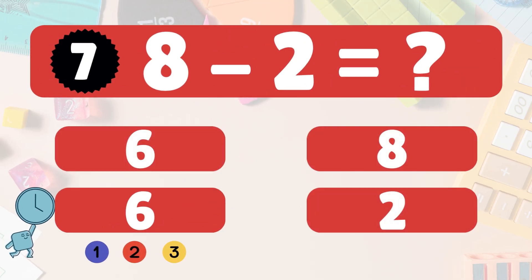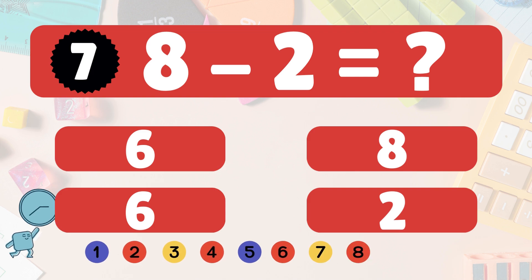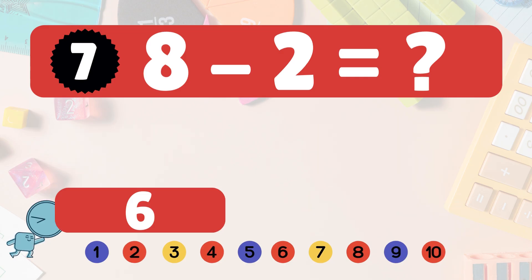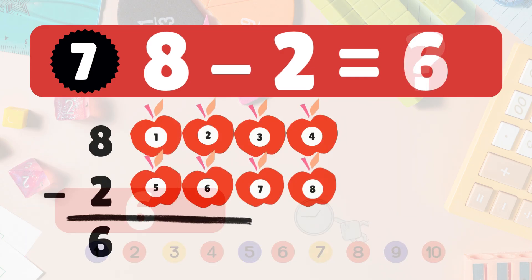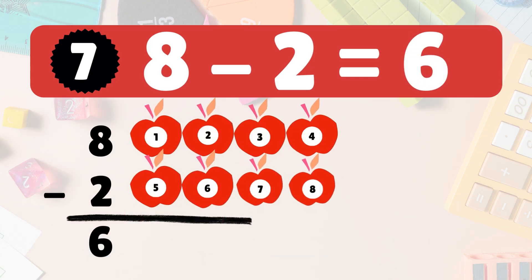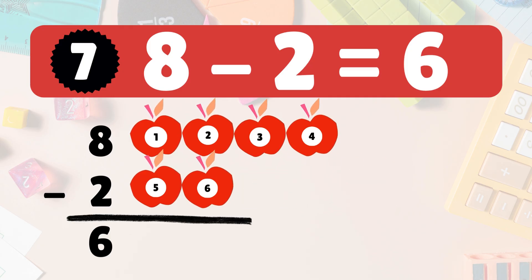You're doing awesome! Next, 8 minus 2 equals what? 8 minus 2 is 6. Here we have 8 apples. Take 2 away — 6 apples left: 1, 2, 3, 4, 5, 6. So 8 minus 2 is 6.